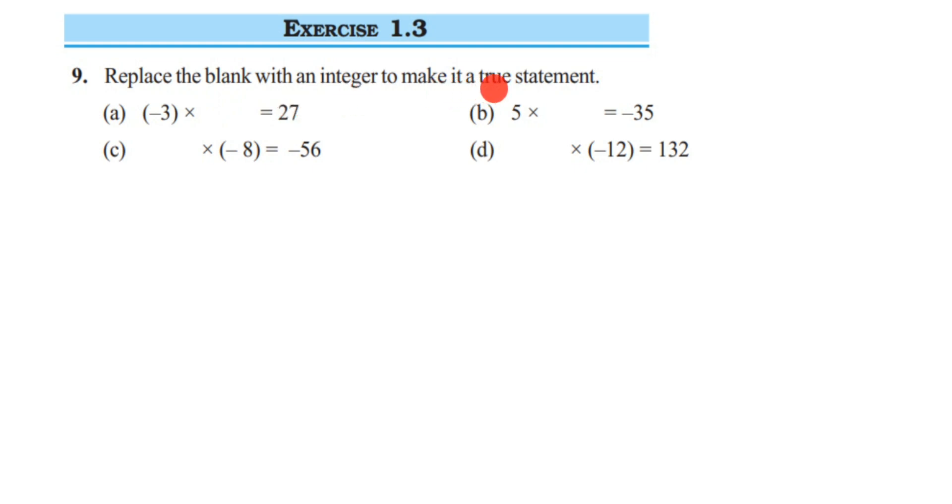The first one is: we have (-3) multiplied by blank equals 27. What should we multiply with 3 to get 27? We know that 3 times 9 equals 27.